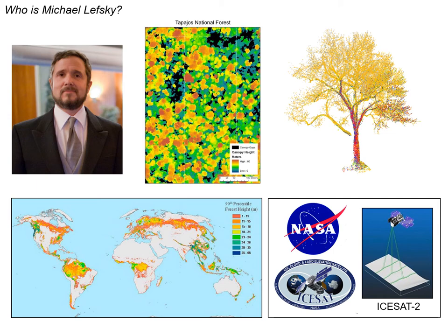That top center panel shows the height of the canopy for an area at the Tapajos National Forest in Brazil. On the right is work that a graduate student did with me, mapping the three-dimensional structure of individual trees. At the bottom left is a global map of forest height I developed using satellite LiDAR data, and on the right are the ICESat and ICESat-2 missions, primarily about estimating ice sheet elevation, but I used the data for forest height estimation.